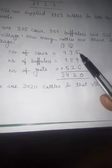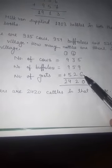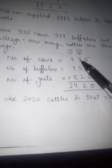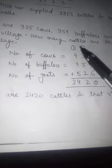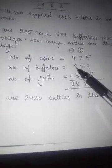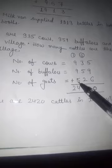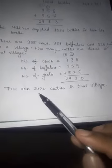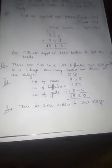Adding the three numbers: 5 plus 9 plus 6 is 20, write 0 carry 2. 3 plus 5 plus 2 plus carry 2 is 12, write 2 carry 1. 1 plus 9 plus 5 is 15 plus 9 is 24. So the answer is 2420. There are 2420 cattle in that village.